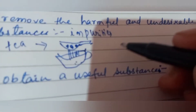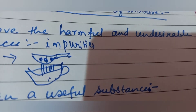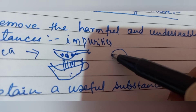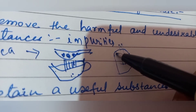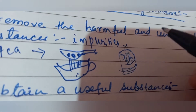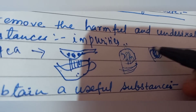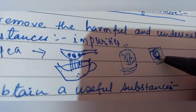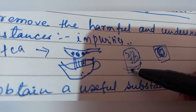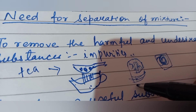Another example: we eat butter. When milk or curd is churned, the fats separate and the watery components remain behind. This fat is separated, frozen, salt is mixed, and you get butter — which is the desired thing. The watery components are discarded. So to remove the harmful and undesirable substances, there is a need to separate the mixture.